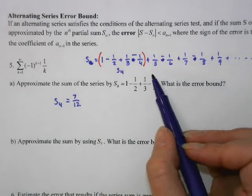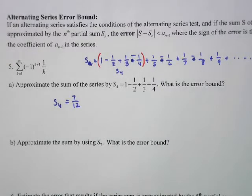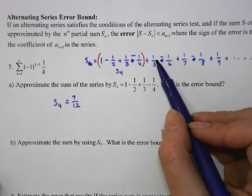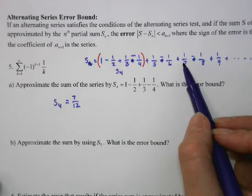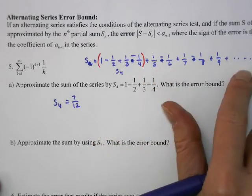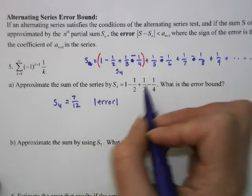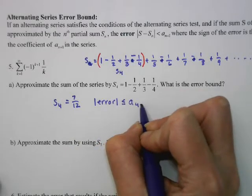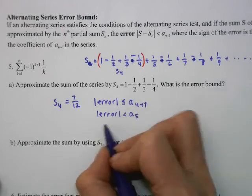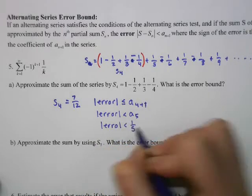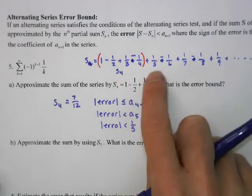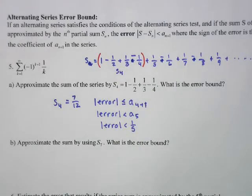This is S₄. It's an approximation, not exact — so how far off is it? We didn't add in all of those remaining terms. Looking at 1/5 − 1/6 + 1/7 − 1/8 + ..., the biggest piece is 1/5 and it keeps getting smaller. So we can say the error is less than or equal to the next term in the sequence, which is A₅ = 1/5. These things added up will be less than 1/5 — that's the error bound. In alternating series, it's always the next term.